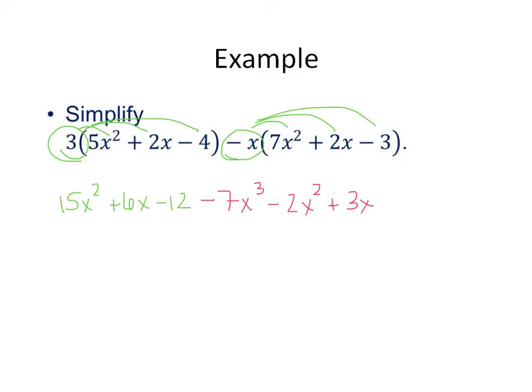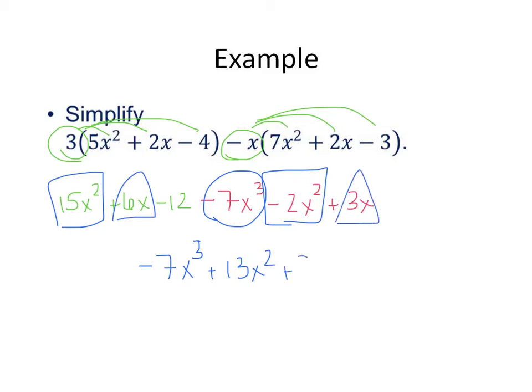We're then going to combine like terms. We're going to put the 7x cubed out front, and it is the only thing that has a cubed. Then we're going to go on to our x squareds, and if we combine those, we're going to get a positive 13x squared. And then our x's is going to be a positive 9x, and we have a minus 12. There's our answer.